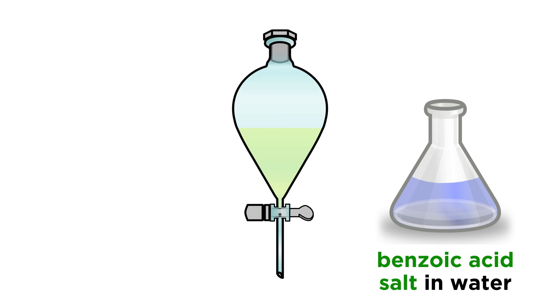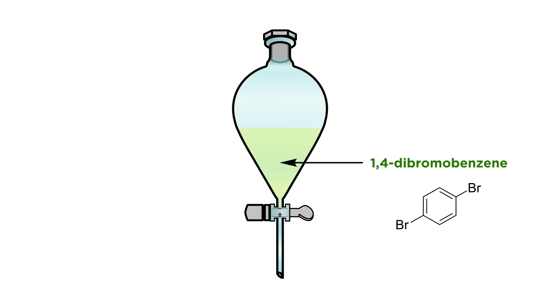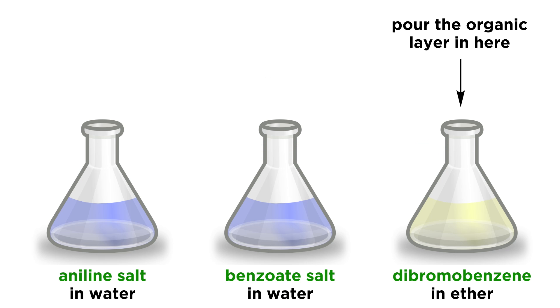So what's left in the separatory funnel? That will just be the dibromobenzene in ether, and we can pour that out the top, to avoid contamination, into yet another new labeled flask. Wash the empty funnel with a little ether to make sure we get it all, and add that to the flask. Now toss in a little bit of a drying agent, like sodium sulfate, to suck up any water that may have made it in there.